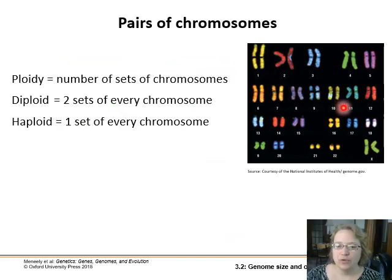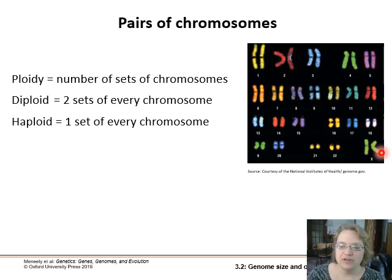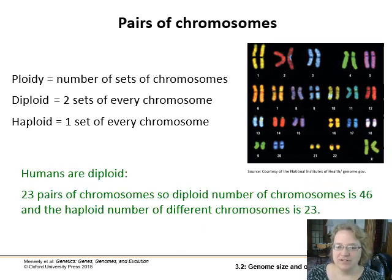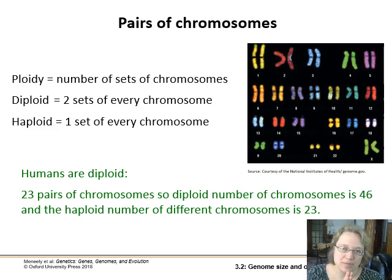Ploidy is the number of sets of chromosomes you have. If you're diploid you have two sets, like we do; if you're haploid you have one set. Humans are diploid, so we have 23 pairs of chromosomes. Our diploid number is 46 and our haploid number is 23.